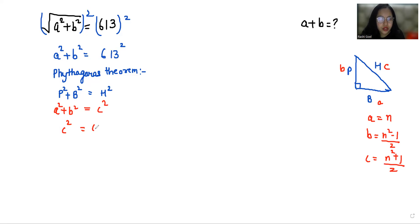So c² = 613² and the value of c is (n² + 1)/2 = 613².